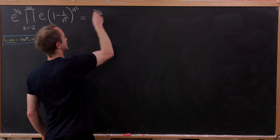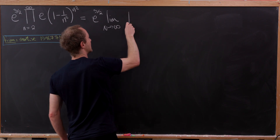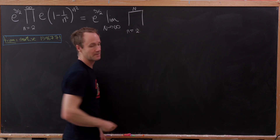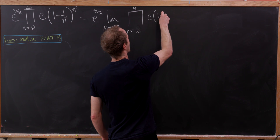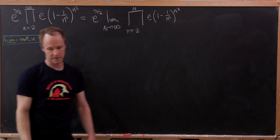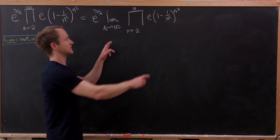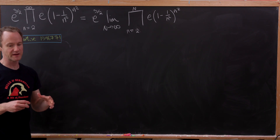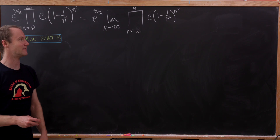So we have e to the three halves, and then the limit as capital N goes to infinity, and then the product as little n goes from 2 to capital N of the terms we're taking the product over: e times 1 minus 1 over n squared, all raised to the n squared. Now observe that I'm taking the product of n minus 1 things, and each of those has a term involving e, so I can factor an e out from all of them — they combine into e to the n minus 1.